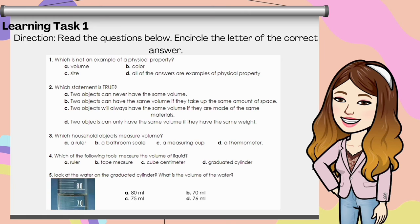Circle the letter of your answer. Number two: which statement is true? A, two objects can never have the same volume. B, two objects can have the same volume if they take up the same amount of space. C, two objects will always have the same volume if they are made of the same materials. D, two objects can only have the same volume if they have the same weight. Number three: which household object measures volume? Is it A, ruler? B, a bathroom scale? C, a measuring cup? Or D, a thermometer?